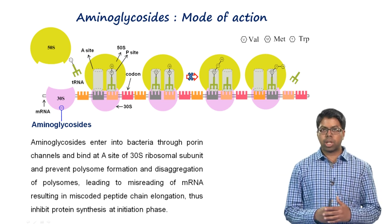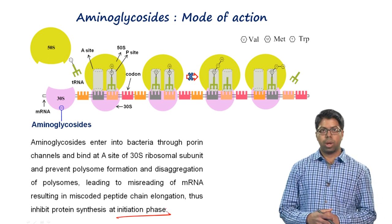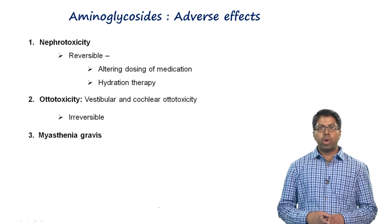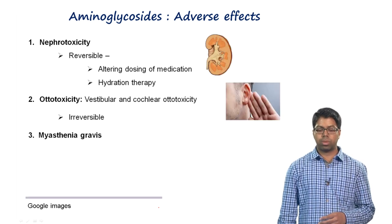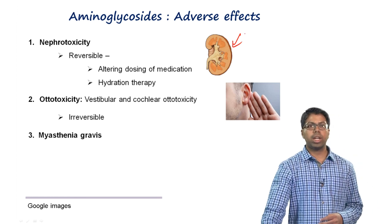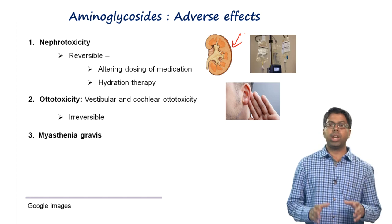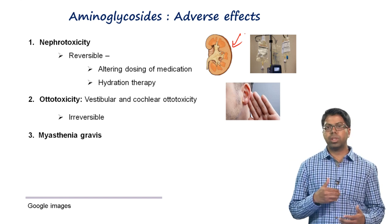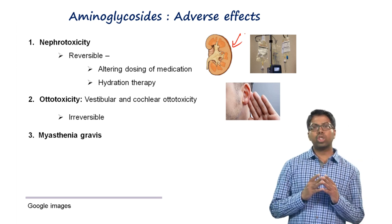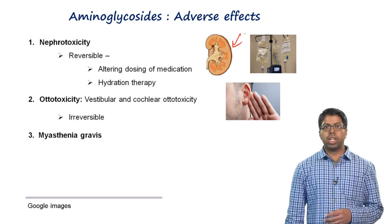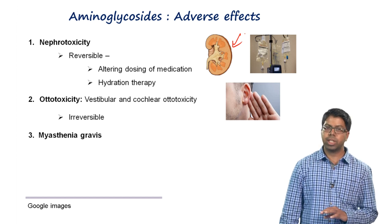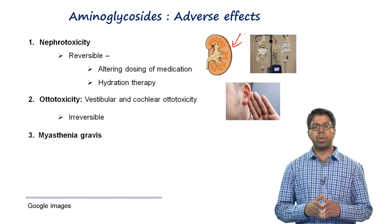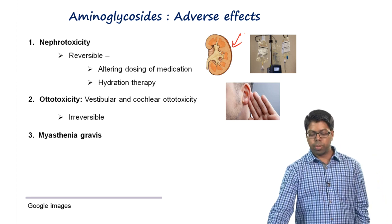Aminoglycosides are the first class of antibiotic that inhibits the initiation phase of protein synthesis. Their toxicities include nephrotoxicity — they concentrate in nephrons of the kidneys, though this is reversible through dose adjustment or IV hydration therapy. They also concentrate in the eighth cranial nerve causing irreversible ototoxicity, with vestibular and cochlear damage leading to permanent hearing loss. Aminoglycosides are also associated with the long-term neuromuscular disease myasthenia gravis.